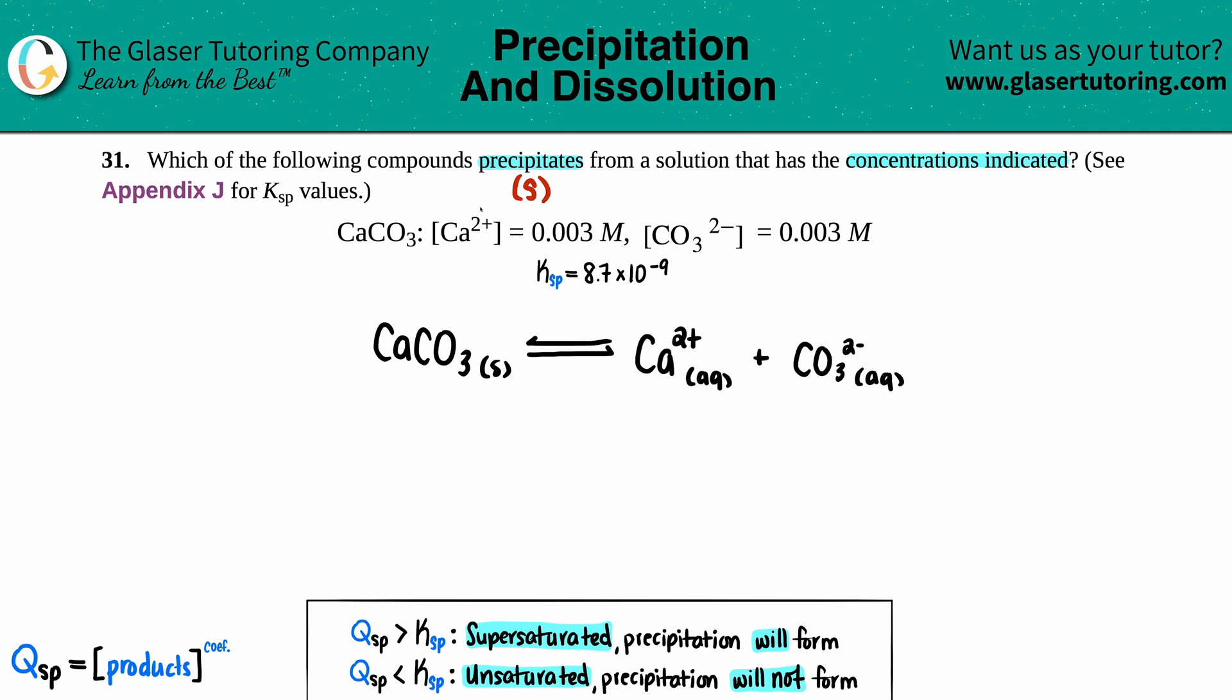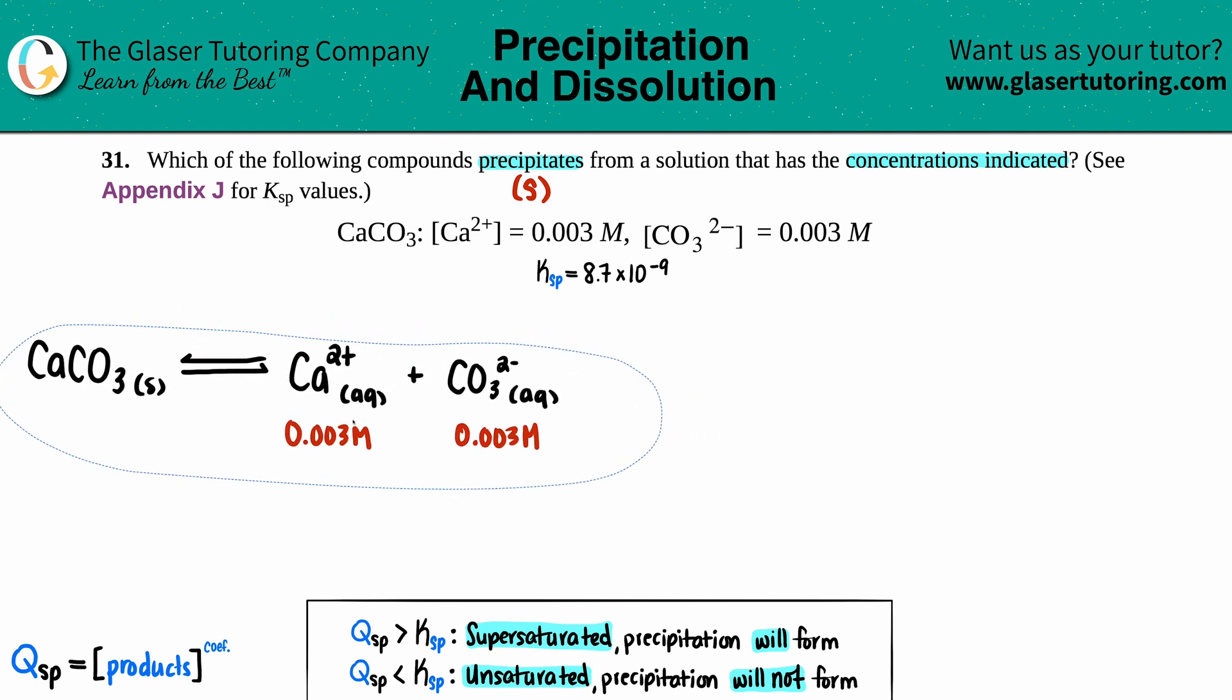They already told us the numbers. Calcium was 0.003 molarity, and so was the carbonate, 0.003 molarity. Let's throw this off to the side because from there I'm going to find out what our Qsp equation is.